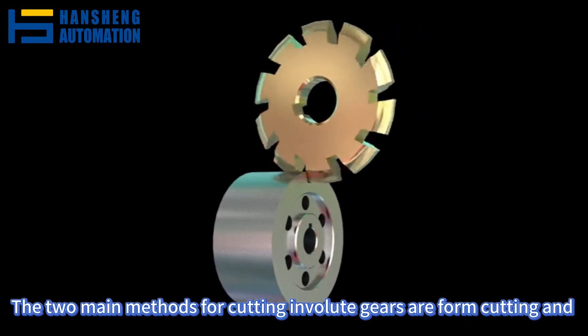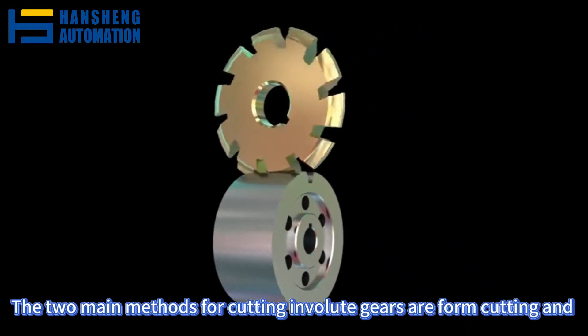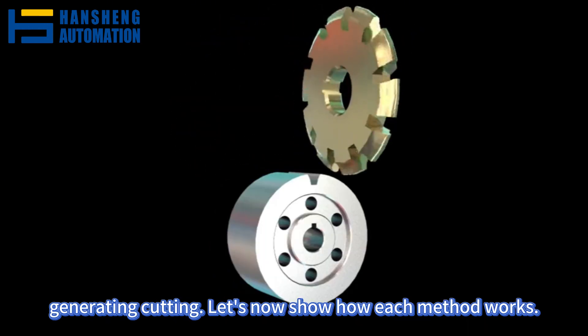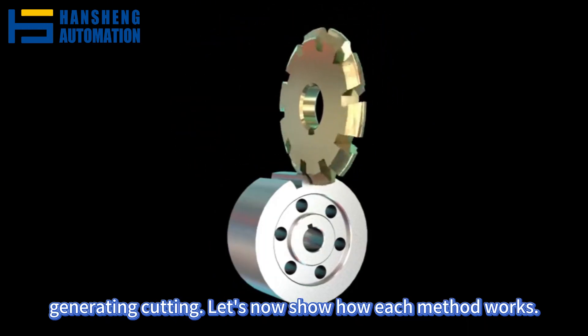The two main methods for cutting involute gears are form cutting and generating cutting. Let's now show how each method works.